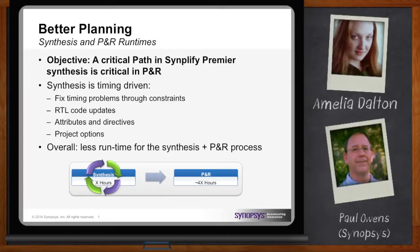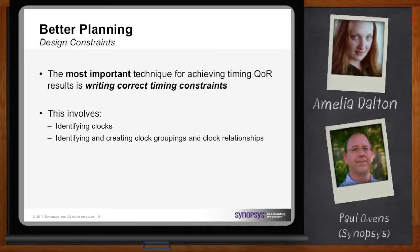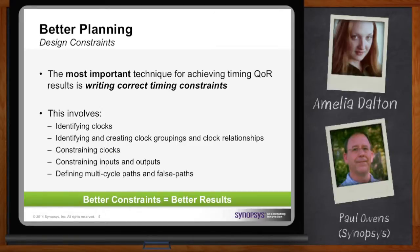Constraints — one of my biggest challenges is always getting my constraints right. The important thing about constraints is you want to have the correct timing constraints. This means you want to identify the clocks in your design, identify and create clock groupings and clock relationships, define the various clocks from your design and set them into different asynchronous groups, constrain your clocks for the correct frequency, constrain your inputs and outputs, and identify and constrain multi-cycle paths and false paths.